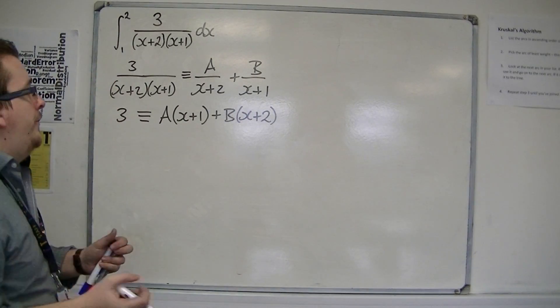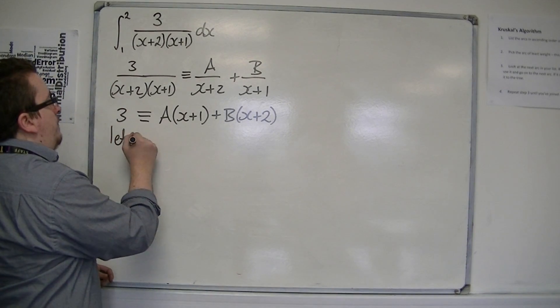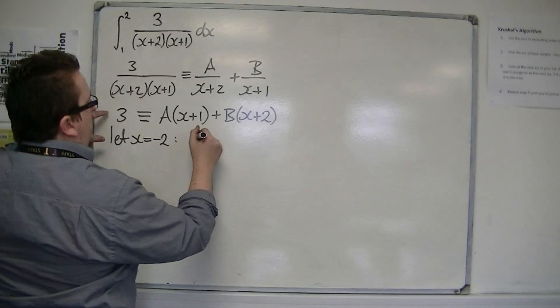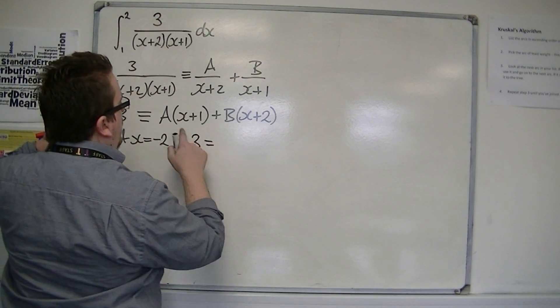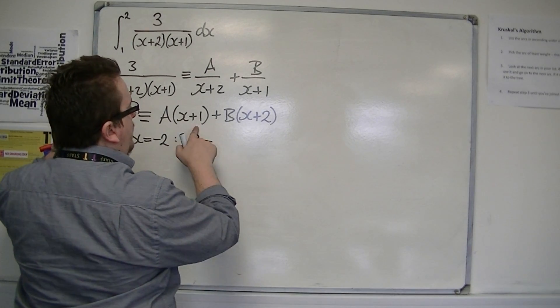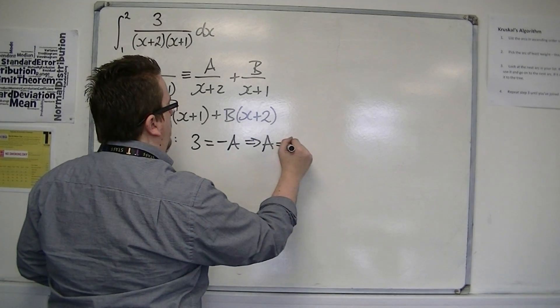Then I can choose values of x that are going to eliminate the brackets. So I'm going to let x be -2, so that it eliminates that bracket so I can find A. So I've got 3 equals (-2+1) times A. So -2+1 is -1, so we've got -A. So that means that A is -3.